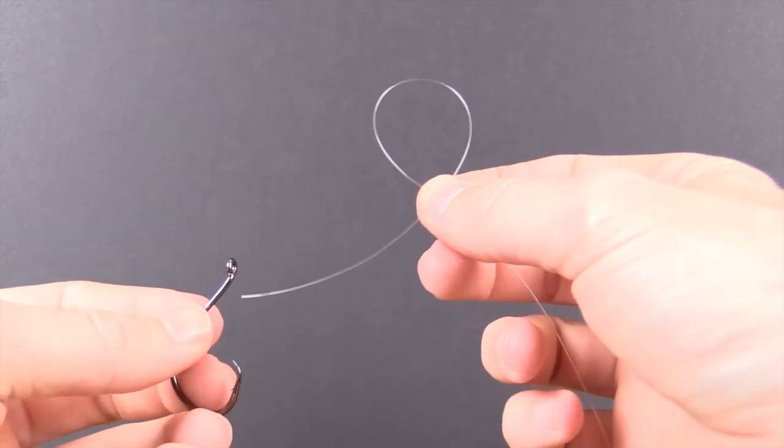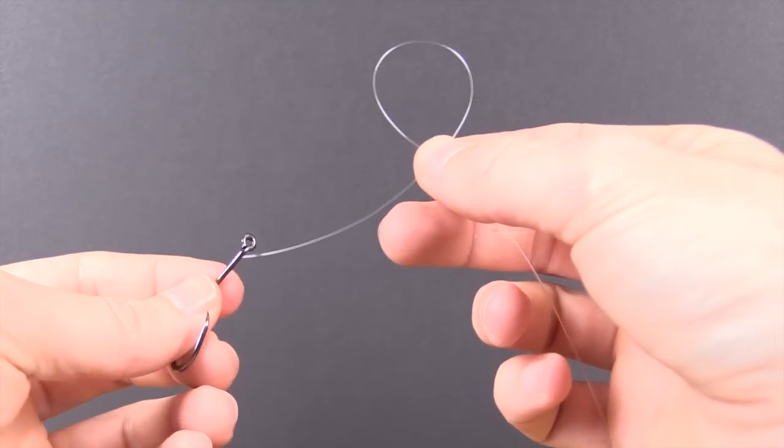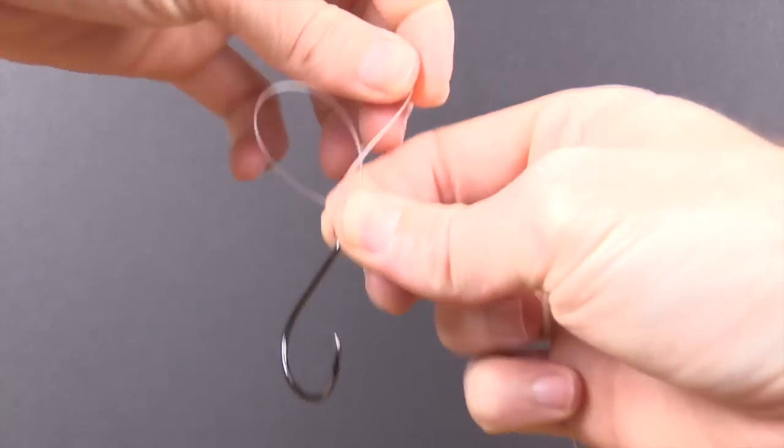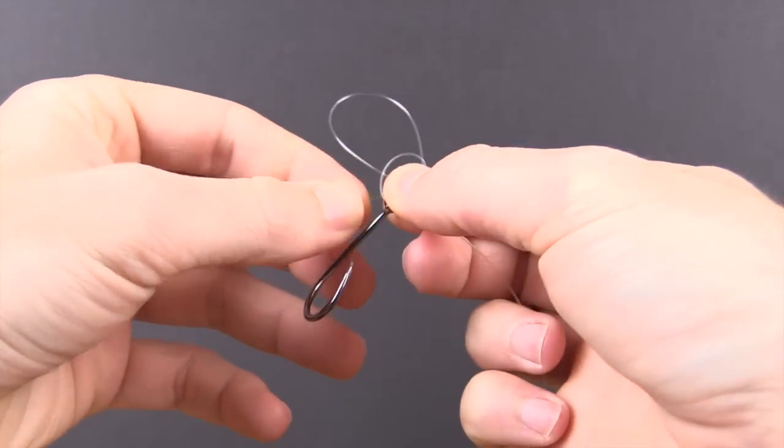At this point, we do put the hook on. Make sure I get it through the eye there. And so now we actually do a second loop right in front of the first one and make it smaller.